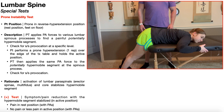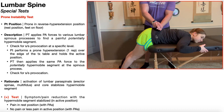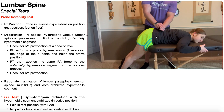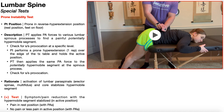To perform the prone instability test, the patient needs to be in the rest position of the reverse hyperextension — her hip crease is right around the edge of the table, she can hold on with both arms to either edge of the table for stability, and in the rest position her feet are both on the floor. While the patient's in this resting position, the PT applies a series of PA forces to the various lumbar spinous processes, starting at L5 and working up to find a painful and potentially hypermobile segment. The patient reports pain, and the clinician can feel that it is hypermobile relative to the segments above and below it.